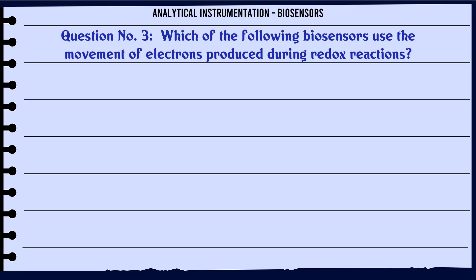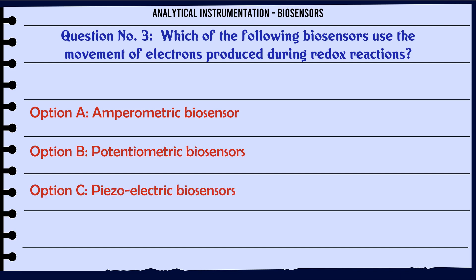Which of the following biosensors use the movement of electrons produced during redox reactions? Option A: Amperometric biosensor. Option B: Potentiometric biosensors. Option C: Piezoelectric biosensors. Option D: Optical biosensors.